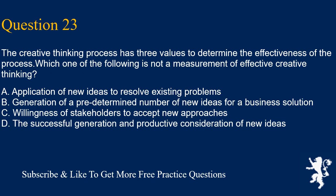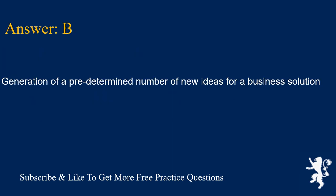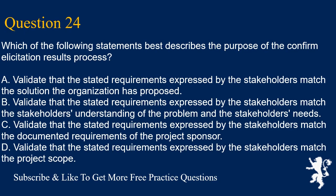Question 23: The creative thinking process has three values to determine the effectiveness of the process. Which one of the following is not a measurement of effective creative thinking? A. Application of new ideas to resolve existing problems. B. Generation of a predetermined number of new ideas for a business solution. C. Willingness of stakeholders to accept new approaches. D. The successful generation and productive consideration of new ideas. Answer is B. Generation of a predetermined number of new ideas for a business solution.